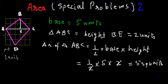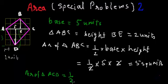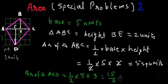Now for triangle ACD, we already know the base is 5 units. To find the height, I will draw a perpendicular from point D to the base, calling the foot point F. The length of DF is 3 units. So the area of triangle ACD = ½ × 5 × 3 = 15/2 = 7.5 square units.